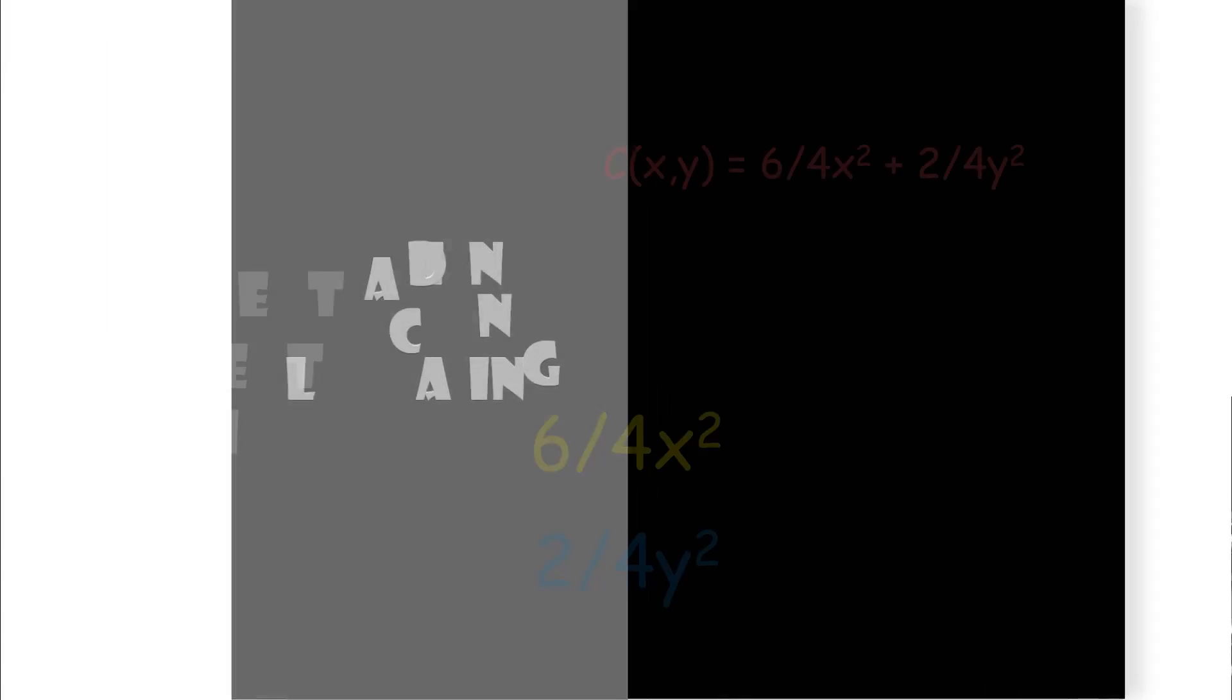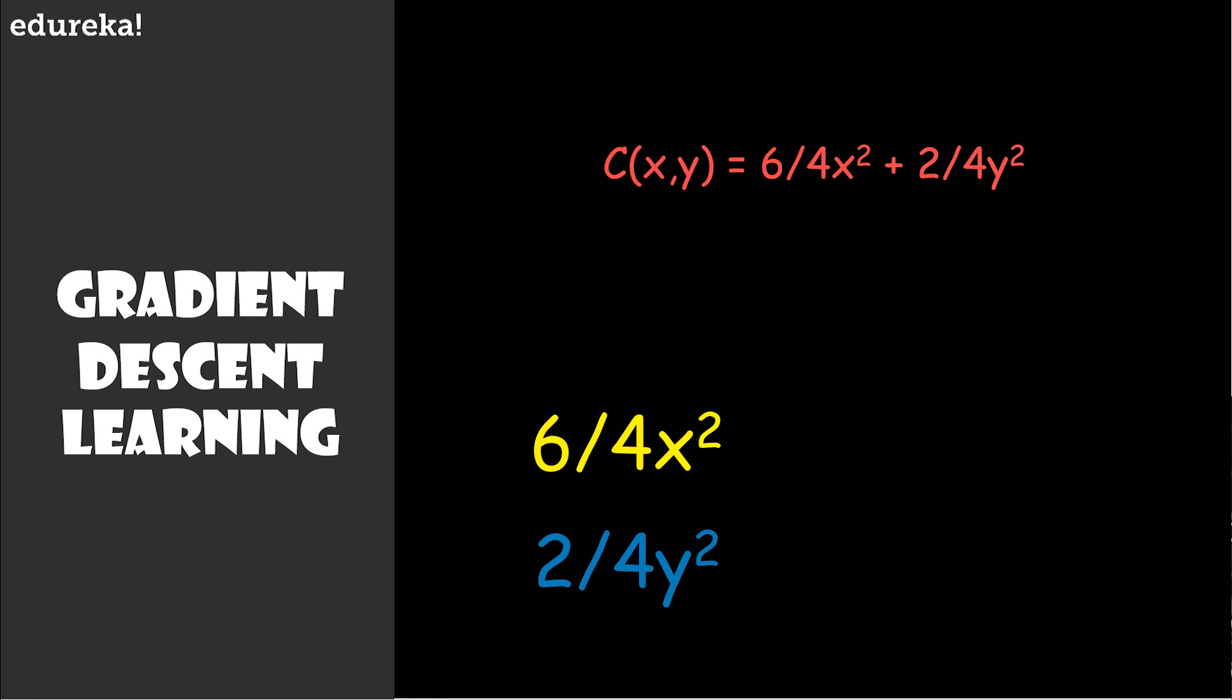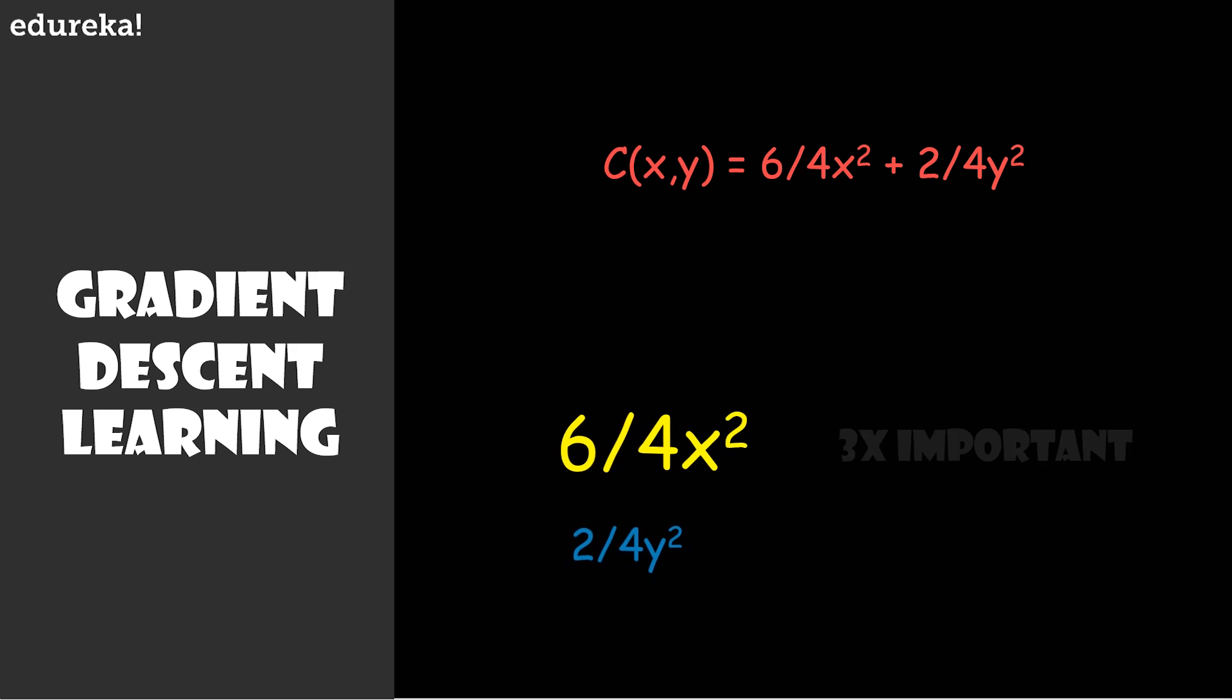You'll see in our network an adjustment to one of the weights might have a much greater impact on the cost function than the adjustment to other weights. So if we take a particular cost function, suppose 6/4 x square plus 2/4 y square, this is just a simple example. Now what we do is compute its gradient at some particular point. Then what you can say is that the changes to the first variable, which is 6/4 x square, has three times the importance as the changes to the second variable.